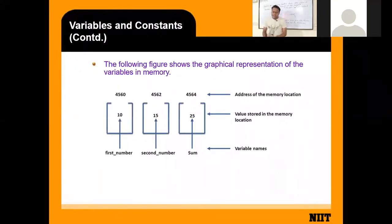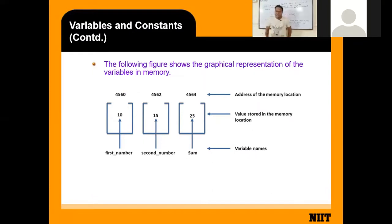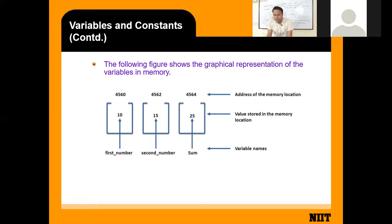Here I define three variables: first number, second number, and sum. Names like first number, second number, and sum are for us — the programmer. The numbers like 4560, 4562, 4564 are the memory addresses allocated by the computer. The value stored in the memory location, and the names first number, second number, and sum are called variable names.